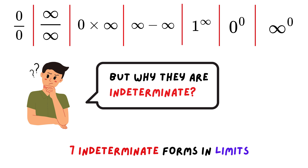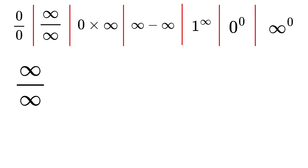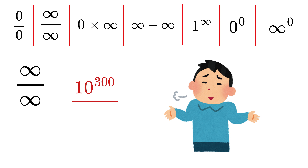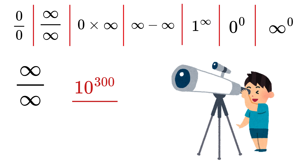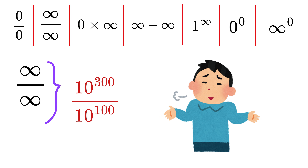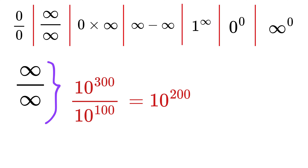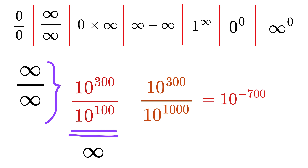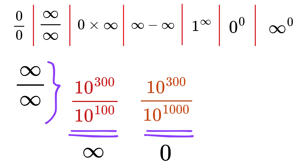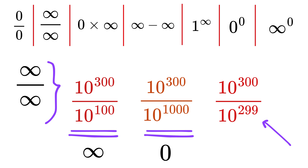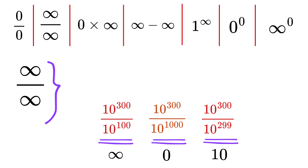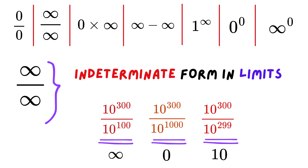So, if you want to find out why they are indeterminate, consider infinity over infinity. If the numerator is 10 raised to 300 — a very large value we call infinite for visualization — and the denominator is 10 raised to 100, then the ratio is 10 raised to 200, showing that infinity over infinity can be infinite. Now if the denominator becomes 10 raised to 1,000, the ratio is 10 raised to minus 700, which is almost 0. And if the denominator becomes 10 raised to 299, the ratio is 10 raised to 1, which is 10 — a finite value. That is why infinity over infinity is indeterminate: it can be 0, or infinity, or any other finite value.